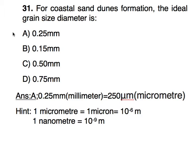Welcome to the revision module with rectification. We will see one question where there is a rectification. Let's start our revision. For coastal sand dunes formation, the ideal grain size diameter is 0.25 millimeter, which can also be represented in micrometers as 250 micrometers.